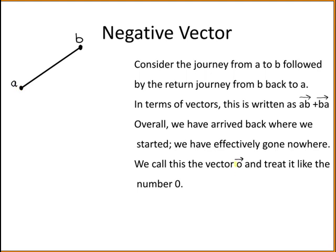This is called the zero vector, written like this, and you treat it like the number zero. So if you were to write AB plus BA, this is the zero vector.